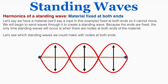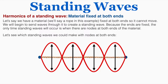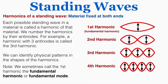Here are further patterns that work because we just need nodes at either end of the material. Each possible standing wave in a material is called a harmonic of that material. For now, the harmonics are numbered by their anti-nodes — for example, a harmonic with three anti-nodes is called the third harmonic. I'll clarify that numbering later in the video.